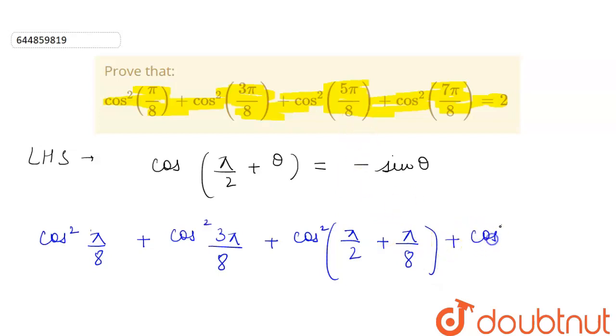Plus cos square of, again we will have to write this in the term of pi by 2 plus theta. This will be equal to pi by 2 plus 3 pi by 8. Again, we will see that this will come out to be equal to 7 pi by 8.